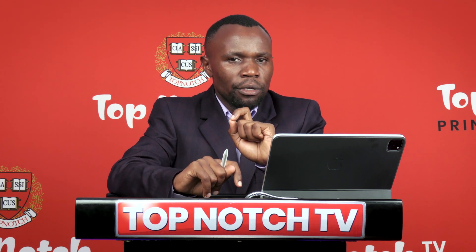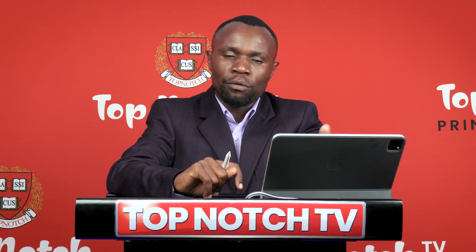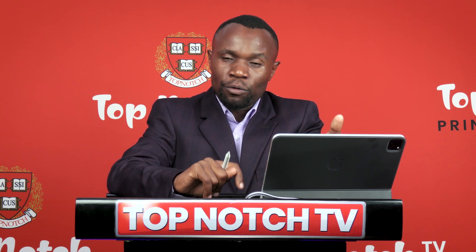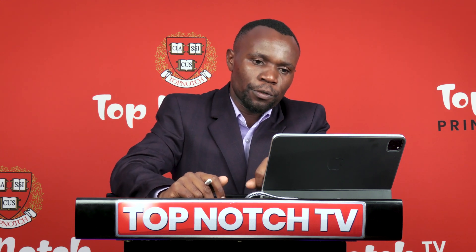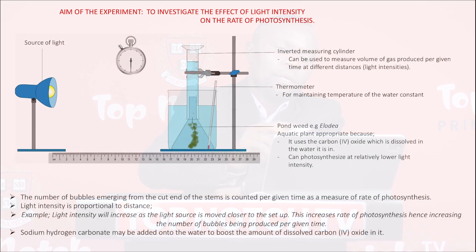How did we measure the rate of photosynthesis in this setup? The rate of photosynthesis was measured by the number of bubbles — or the production of bubbles — per unit time: you can measure per minute or per hour. You can also measure the rate of photosynthesis by measuring the volume of gas being produced, because as more gas is produced there will be a displacement of water in the inverted measuring cylinder.